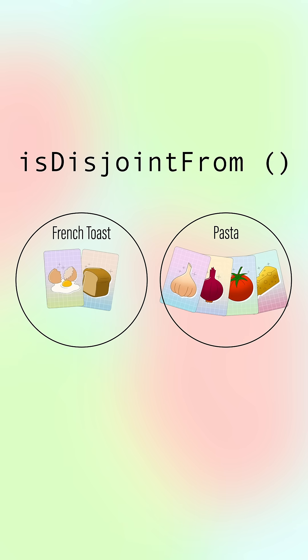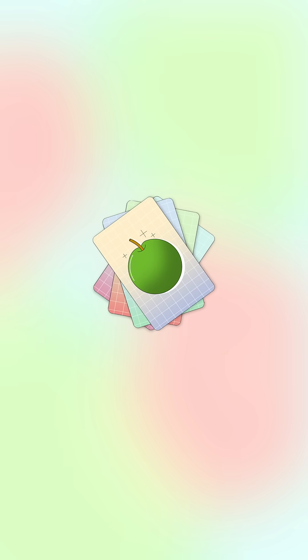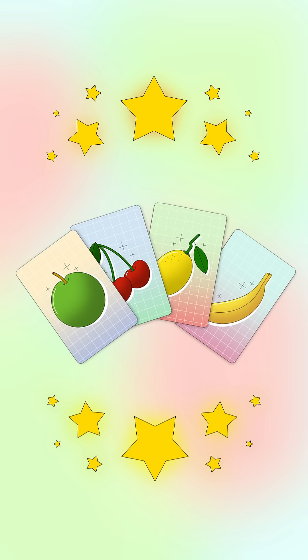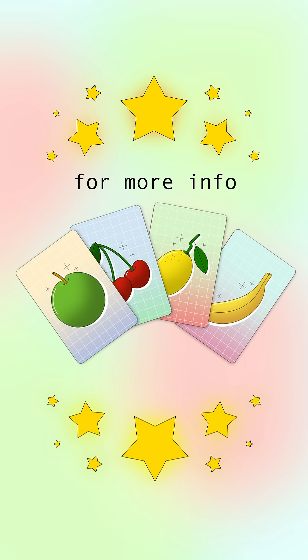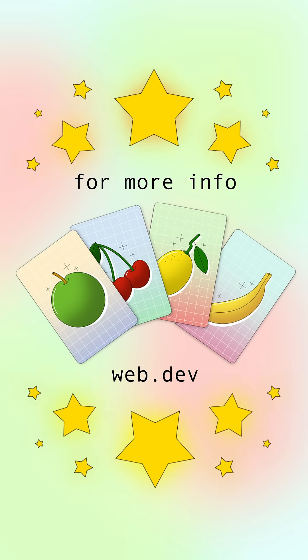Lastly, using isDisjointFrom can check if one set has no elements in common with another set. Sets are your key to efficient data handling. Check out more about these handy methods on web.dev.